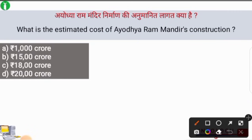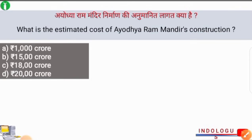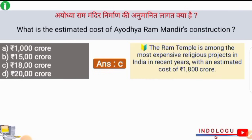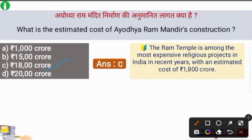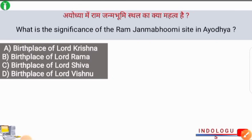What is the estimated cost of Ayodhya Ram Mandir's construction? The correct answer is option number C, approximately 18,000 crore rupees. The Ram Temple is among the most expensive religious projects in India in recent years, with an estimated cost of 18,000 crore rupees. You have to remember this.